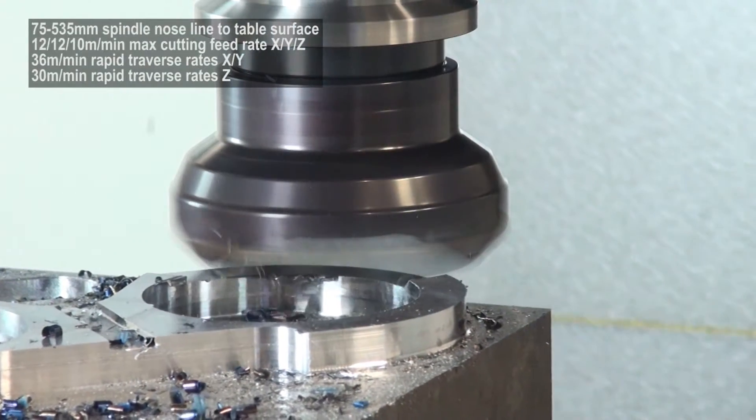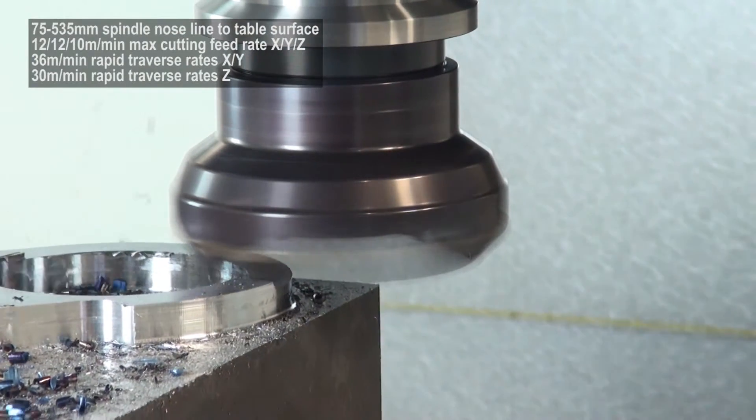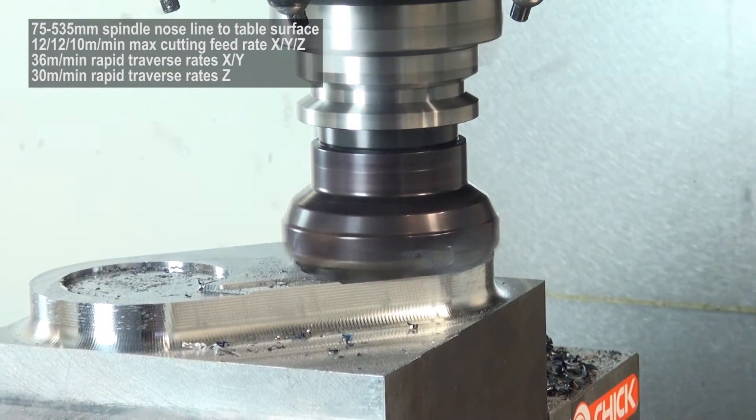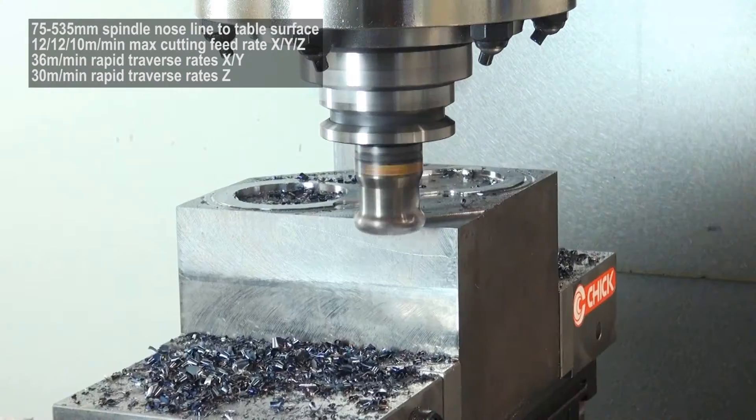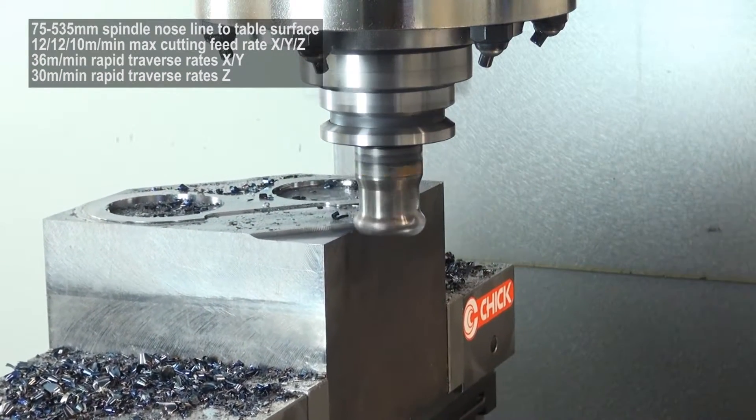The table size is 910x380mm with a loading capacity of 660kg and the spindle nose to table surface measurement is 75-535mm.